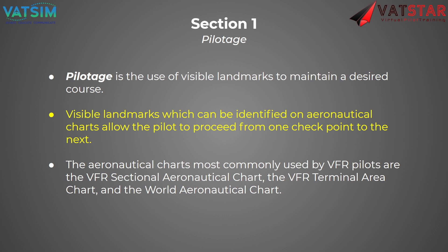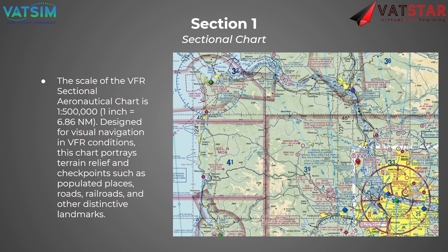The aeronautical charts you're commonly going to use are going to be those VFR sectional charts, as well as the VFR terminal area chart, and in very rare cases the world aeronautical chart. The scale of the sectional chart is 1 to 500,000 — essentially 1 inch is 6.8 or 6.9 nautical miles. These are designed for visual navigation in VFR conditions, portraying things like terrain, VFR checkpoints, populated places indicated in yellow shading, roads, railroads, and other distinct landmarks you might be able to point out from the air.